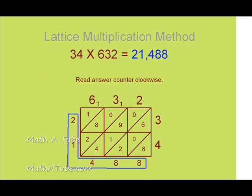Once the addition is complete, you read your answer counter-clockwise around the rectangle. So the answer for 34 times 632 would be 21,488.